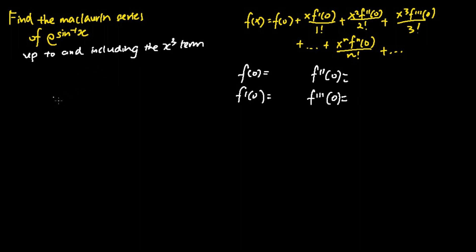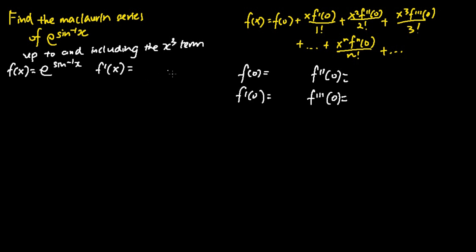We start off by defining what is f(x). We let f(x) to be equal to e to the power of sine inverse x, in which f'(x) is just differentiating f(x) one time. I will first differentiate the power which is sine inverse x. This gives me 1 over the square root of 1 minus x squared, times e to the power of sine inverse x.